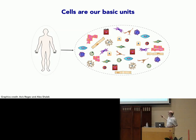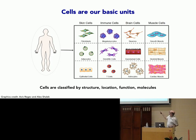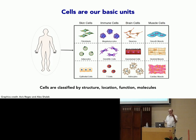We do know from this early work that cells are the basic units of our bodies as well, and there are lots of different types. They have all sorts of different shapes and functions. We can have different types of skin cells and immune cells, brain cells, and muscle cells. We can classify them by structure, location, the function in the body, and the molecules that they express — like the cells in your eye express molecules that allow you to convert light into electrical signals that you can process into vision.